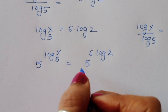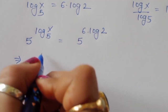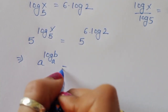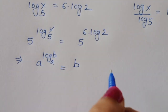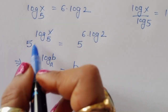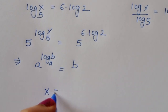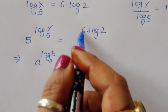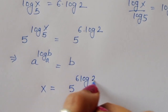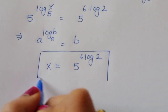We apply the formula: a to the power log_a(b) equals b. Using this formula, 5 to the power log_5(x) gives us x. So it becomes: x is equal to 5 to the power [6 log(2)]. This is the value of x in this equation.